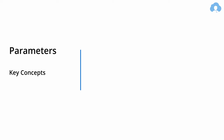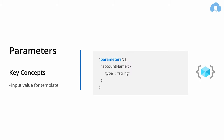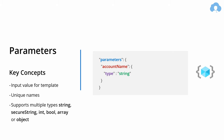While there are many more possibilities with expressions, another key aspect of template parametrization is parameters. Parameters are your way to provide input values for the template. They are defined within their own section called 'parameters', where you define a unique name for a parameter — like 'accountName' — and each parameter definition is an object with only one mandatory property: 'type', which defines the data type.